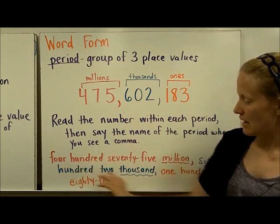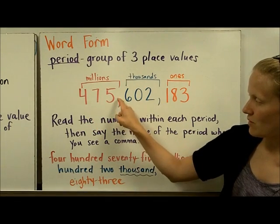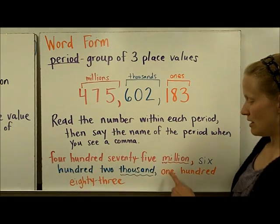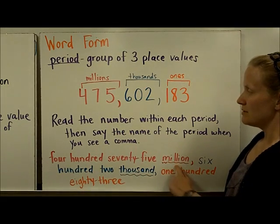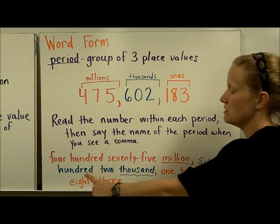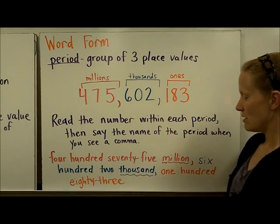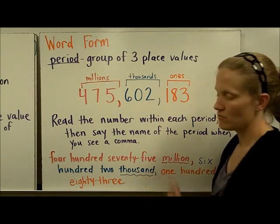So let's see how that works down here. So this is 475 million—and we named the period here—602 thousand, and then we saw that comma, we named the period—183.